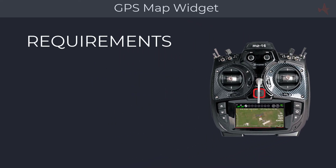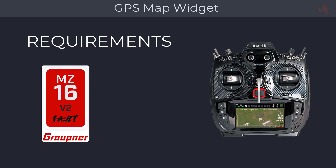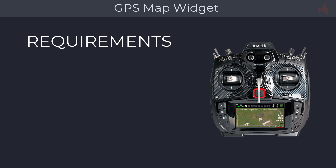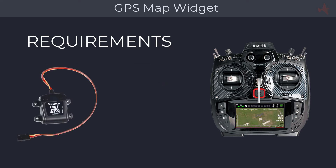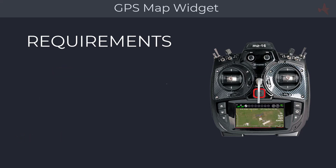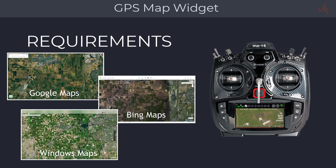This tutorial will show you how to create, calibrate, and install the map, set up notifications, and discuss advanced topics. You will need a Graupner mz16 or mz32 radio with firmware version 2 or higher, including voice and help files. To record flight tracks you will need a compatible GPS module, such as the Hot GPS module by Graupner or the GPS Logger 3 by SM Model. You will also need mapping software such as Google Maps, Bing Maps, or Windows Maps.